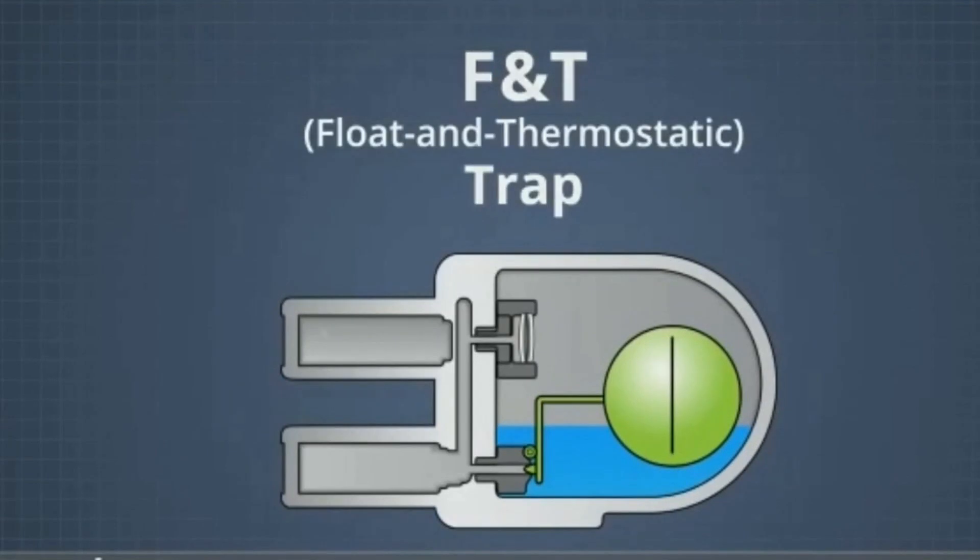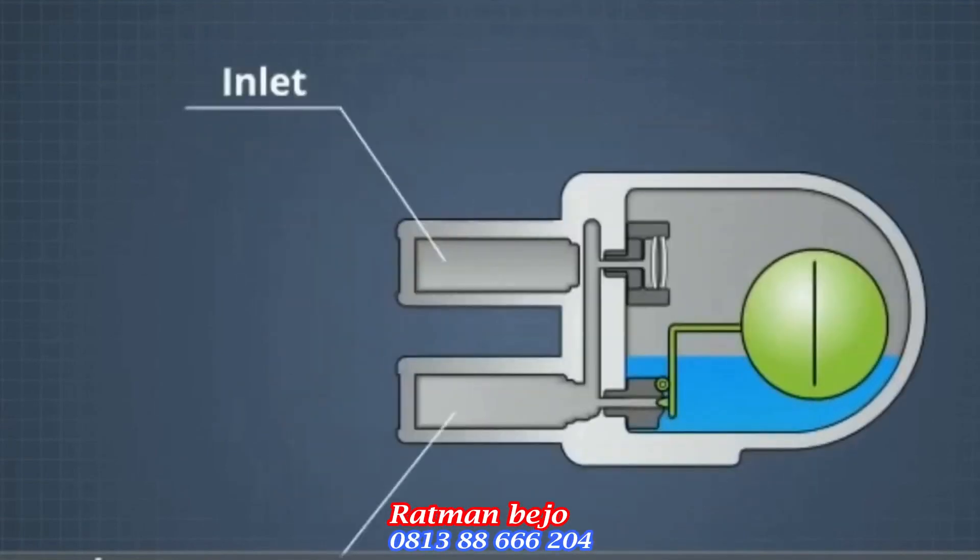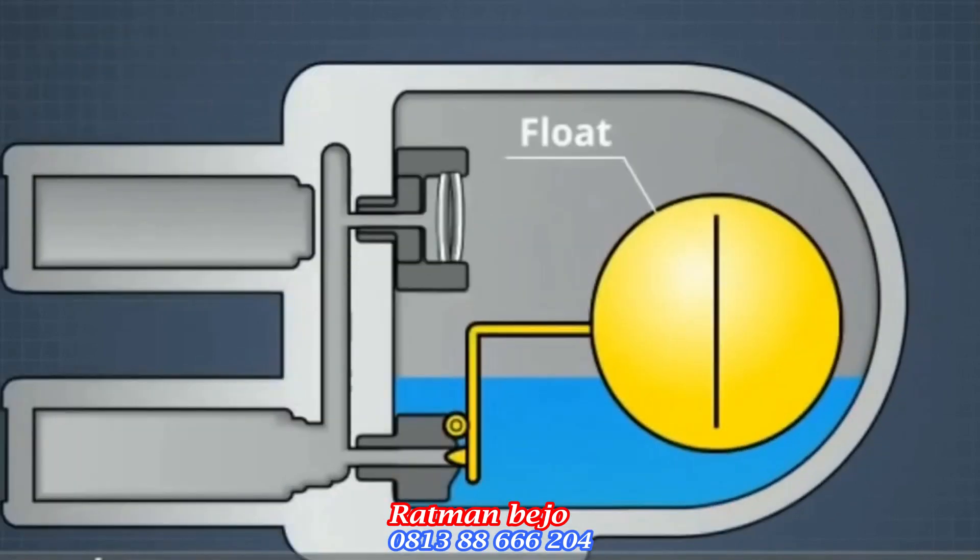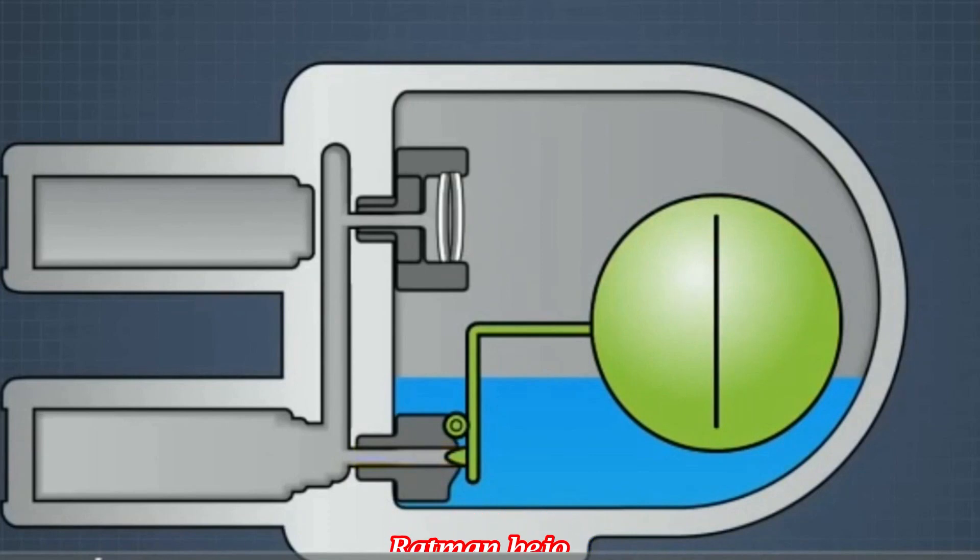In this trap, the inlet is near the top of the body and the outlet is near the bottom. A float on a hinge moves a valve plug which controls the flow of condensate through an orifice in the outlet. The float is positioned such that when the level of the condensate in the body is slightly above the outlet orifice, the valve is closed.